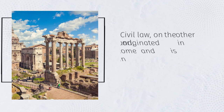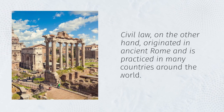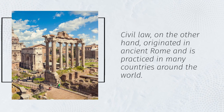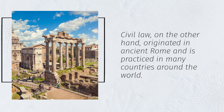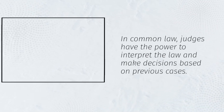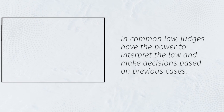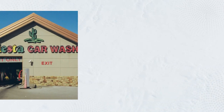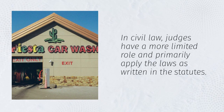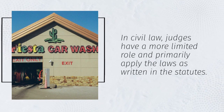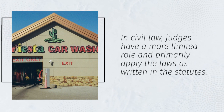Civil law, on the other hand, originated in ancient Rome and is practiced in many countries around the world. In common law, judges have the power to interpret the law and make decisions based on previous cases. In civil law, judges have a more limited role and primarily apply the laws as written in the statutes.